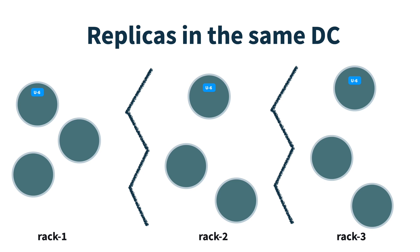Now let's think of some use cases for replicated event sourcing. The first is inside a single data center or single region inside your cloud provider, spreading replicas across the various racks or availability zones. This means in the case of a full rack failure or full availability zone failure you're guaranteed to still have replicas running elsewhere. This also means if there's a network partition between racks, we know we have a full copy of all our entities in each rack or availability zone, meaning any communication between entities will still be able to happen. Whenever that network partition heals, each replica will receive all the events it missed from the other racks.